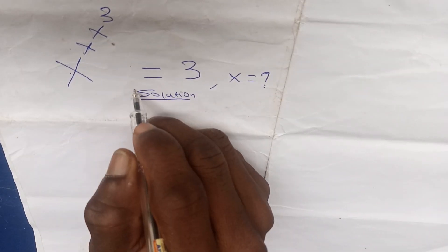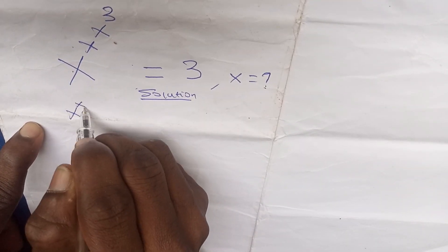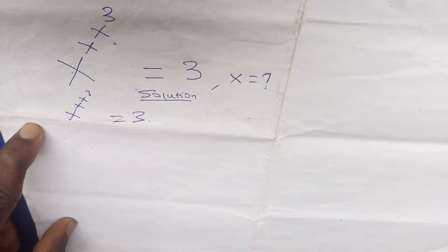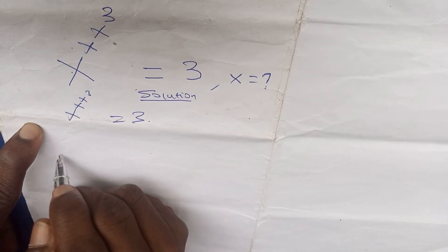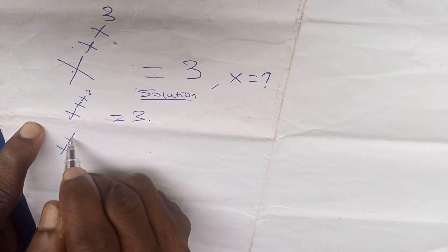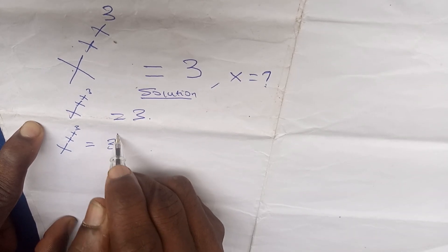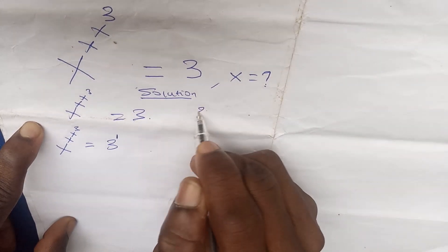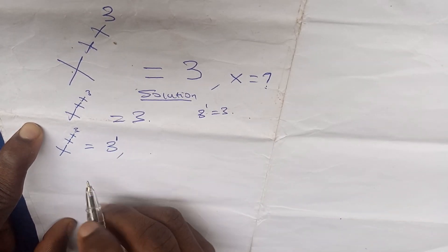So I've written down the solution. I can bring down the question which says x to the power of x to the power of x to the power of three is equals to three. We can write again: x to x to x to the power of three is equals to three to the power of one, because three to the power of one is also going to give us three, so it remains the same.